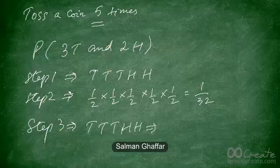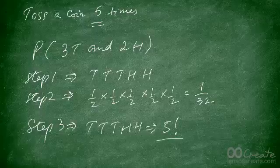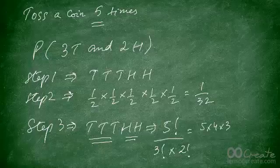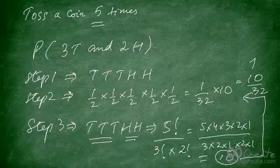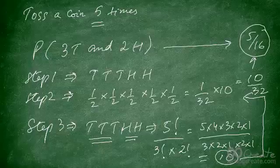Using permutations: the arrangements of TTTHH — five letters — is 5 factorial. We divide by 3 factorial (for the three identical T's) and by 2 factorial (for the two identical H's). That gives 5!/(3! × 2!) = 120/12 = 10. Multiplying 1/32 by 10 gives 10/32, which simplifies to 5/16. That is the probability of getting three tails and two heads on five tosses of a coin.